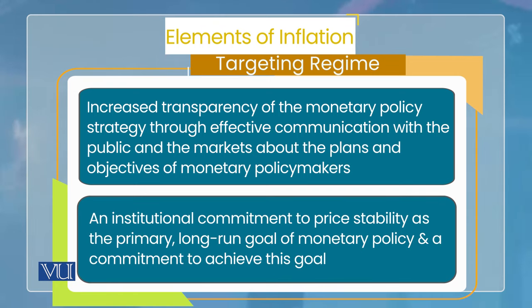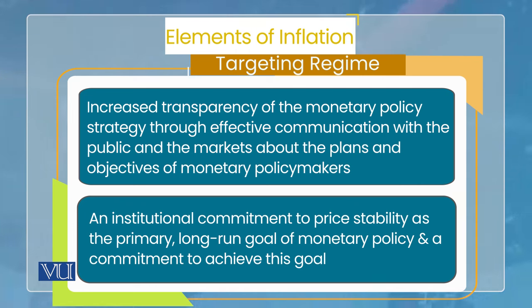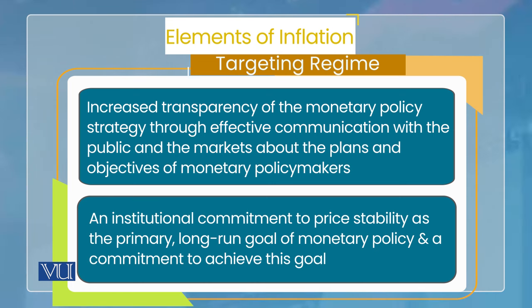چوتھا element: increased transparency — monetary policy کے decisions highly transparent ہوتے ہیں۔ یہ صرف یہ نہیں کہ central bank اپنا decision چھپاتا نہیں، بلکہ وہ effectively communicate کرتا ہے — میڈیا پر جا کے، لوگوں کے سامنے جا کے بتاتا ہے کہ ہمارا decision کیا ہے، اس کی reason کیا ہے، اس کے objectives کیا ہیں، اور اس کے کیا نتائج آئیں گے — یہ سب effective communication کا حصہ ہے۔